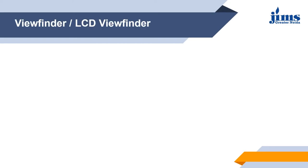A viewfinder is the part of a camera that displays the image to be taken and is only visible when the camera is held to the photographer's eye. The viewfinder also displays various indicators to tell us whether we are recording or not, whether the light is adequate, whether the battery is charged, and many other information such as exposure, shutter speed, audio recording level, frame guide, etc.